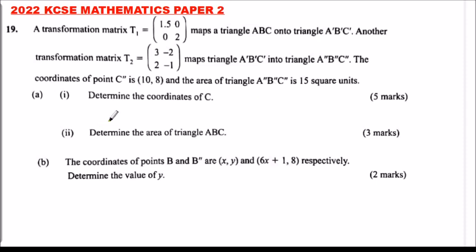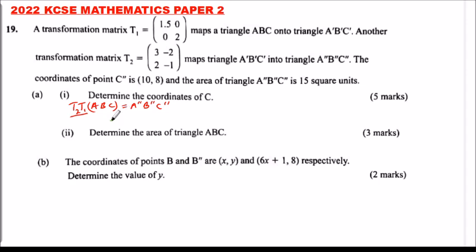Part A, Roman numeral 1: determine the coordinates of C. Triangle ABC undergoes transformation T1 followed by T2. To find a single matrix that transforms ABC to A''B''C'', we multiply the two matrices. The order is important — we start with T2 multiplied by T1.